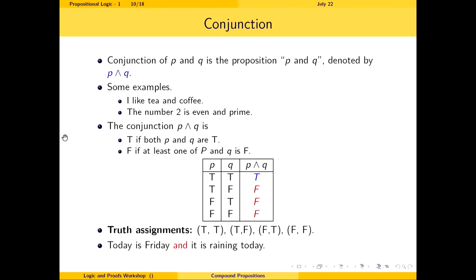What is the truth value of 'Today is Friday and it is raining today'? 'Today is Friday' is true, and 'it is raining today' is false, giving a truth assignment of true, false. Looking up true-false in the conjunction truth table gives false. Therefore, the truth value of this statement is false.